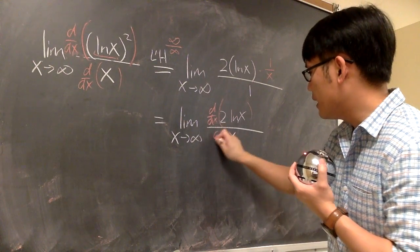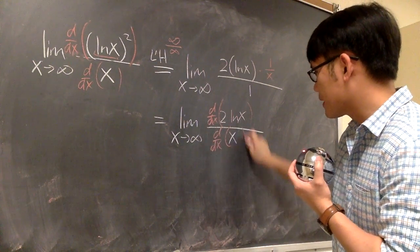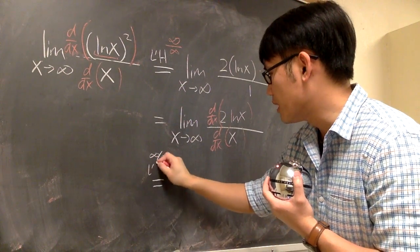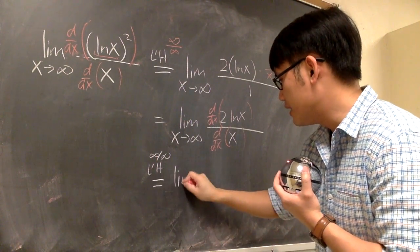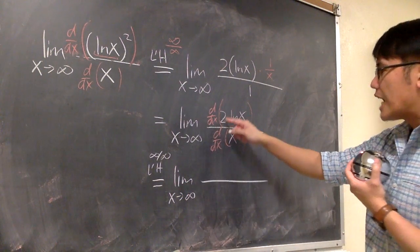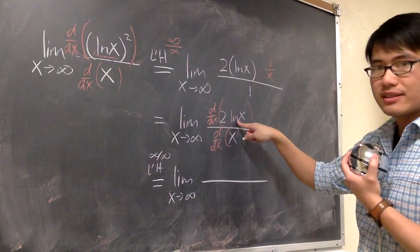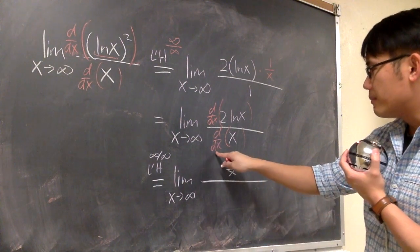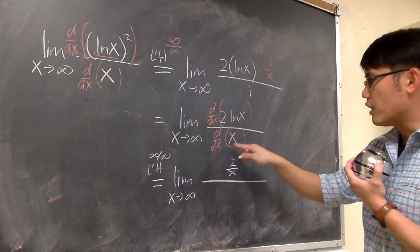So let's do this, and let's do that. So, once again, this is the infinity over infinity situation. We are using L'Hôpital's rule, and then we will still have the limit as x goes to infinity. On the top, the derivative of 2 ln x is just 2 over x. And the derivative of the bottom, the derivative of x is just 1.